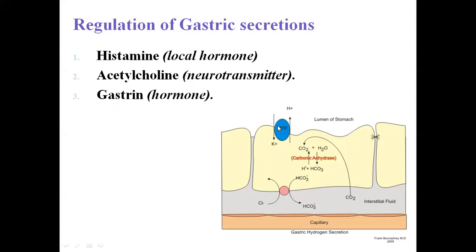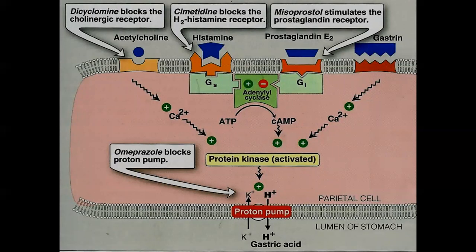This H+/K+ ATPase channel is controlled by several factors, and one of the factors contributing to acid cell secretion is gastrin. This is the main factor which stimulates H+ ion synthesis. If gastrin secretion is increased — secreted from gastric G cells — the overall stimulation of acid cell secretion is automatically increased, and H+ acid is the main factor responsible for peptic ulceration.